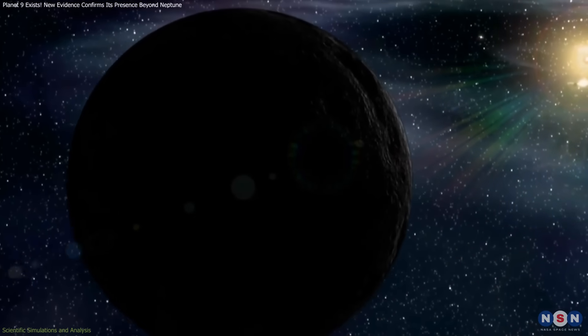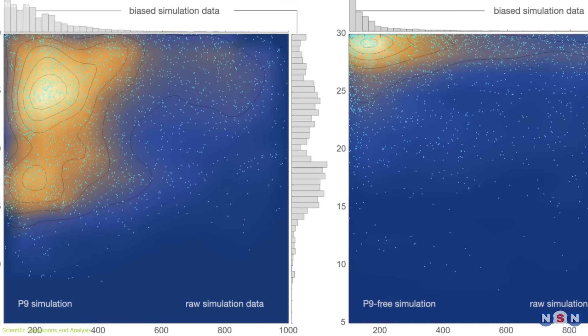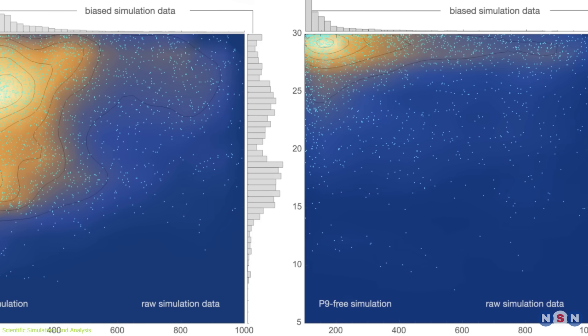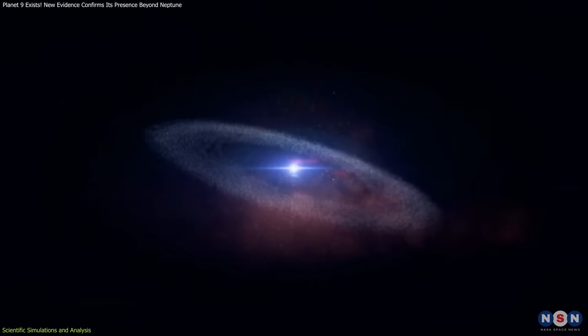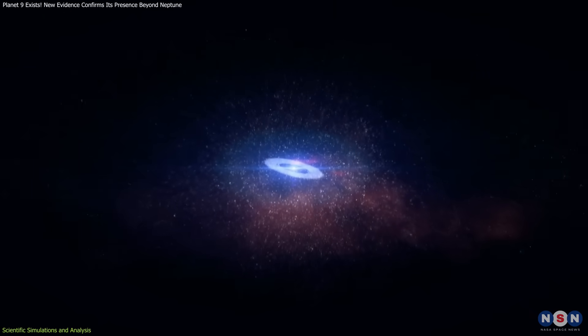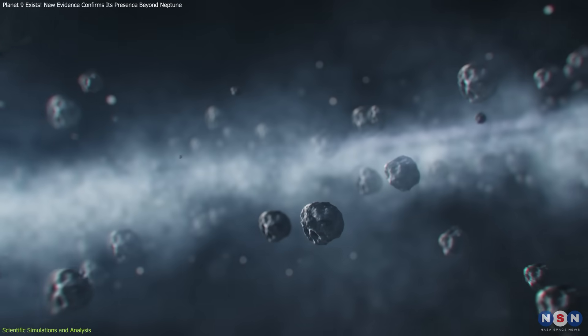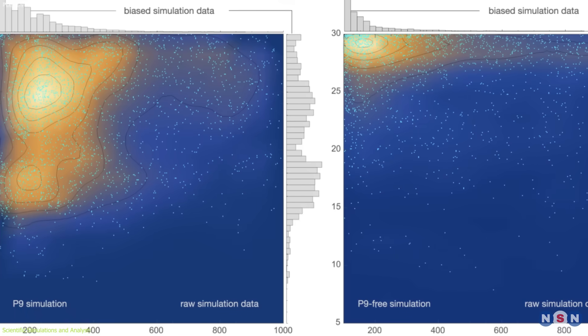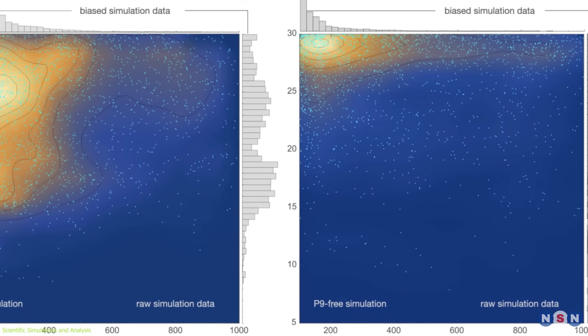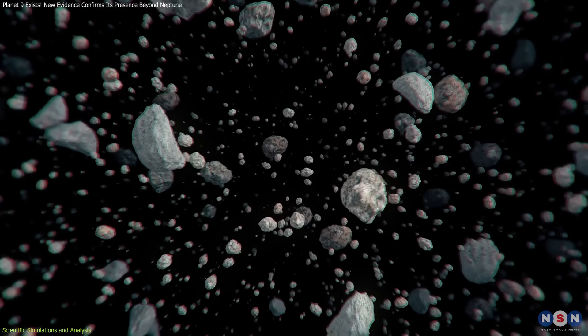Let's take a closer look at how scientists are testing the idea of Planet Nine. To solve this mystery, they've run a series of simulations. Think of it like trying to solve a huge puzzle with millions of pieces scattered across the solar system. Each piece represents an icy object with its own unique orbit. Scientists ran these simulations to compare two situations: one where Planet Nine exists, and one where it doesn't.